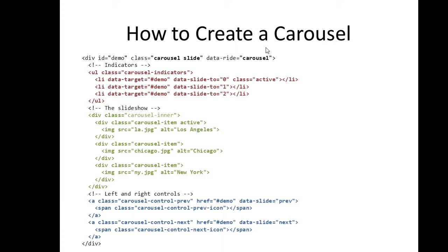To create a carousel, we create a division with an id — the name of the id is up to you — but the class we're going to use is 'carousel', then 'slide', then 'data-ride carousel'. After that, below this will be the indicators.